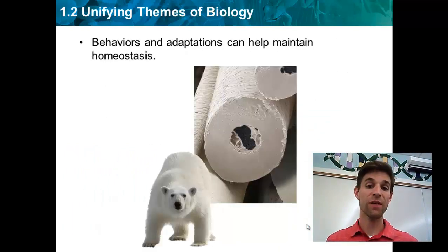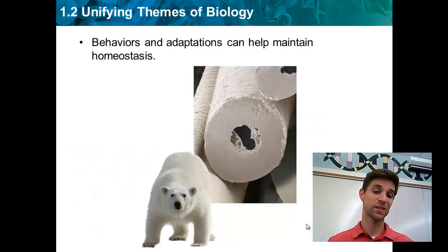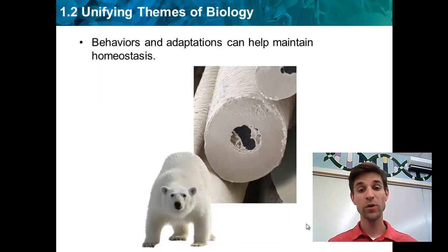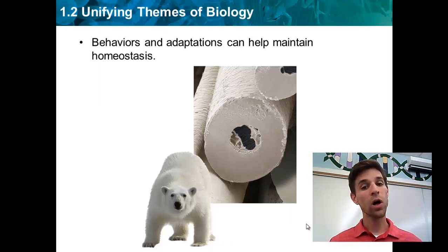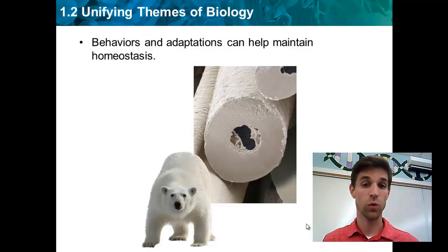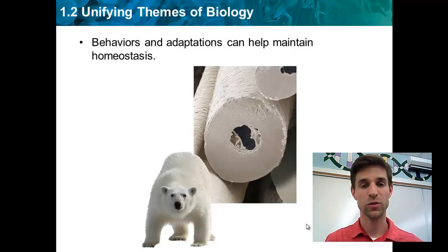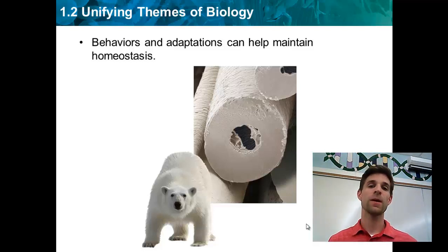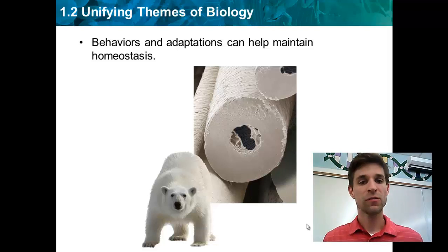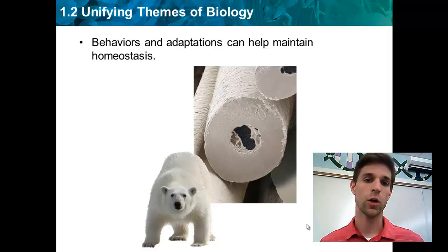Animals specifically have a lot of adaptations that allow them to maintain homeostasis. For example, polar bears actually have hair that's hollow. The hollow part of the hair helps to insulate the bear from cold temperatures — and it also helps insulate it from warm temperatures. So it's an anatomical feature that this species has to help maintain homeostasis.